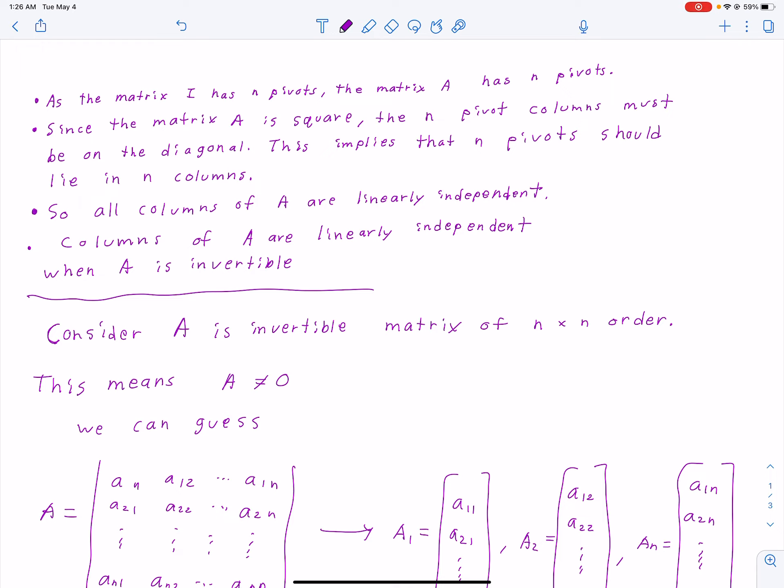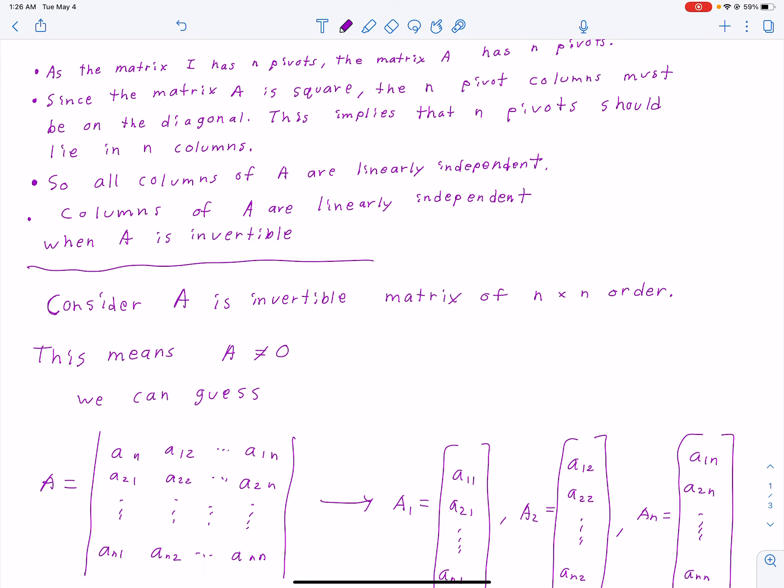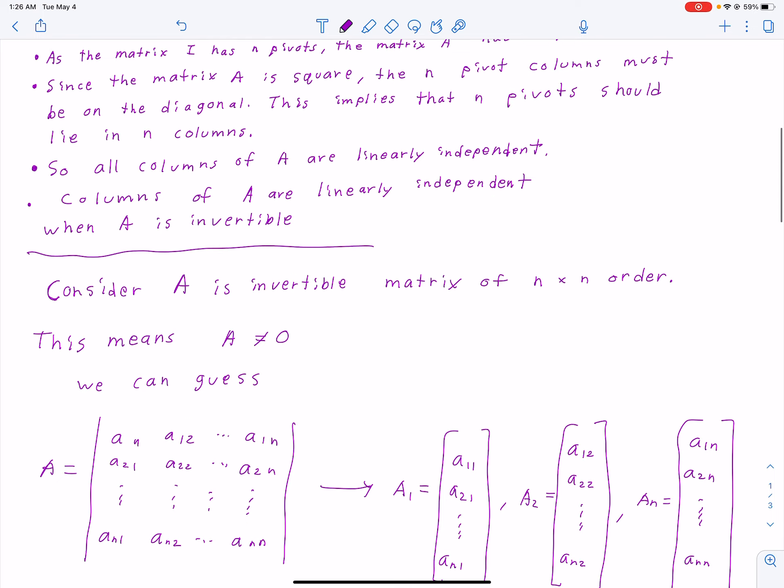This implies that n pivots should lie in n columns. We sort of worked that today in class. So all columns of A are linearly independent. Because of those two reasonings, columns of A are linearly independent when A is invertible. That is a relation I found earlier in the book, in chapter 1.